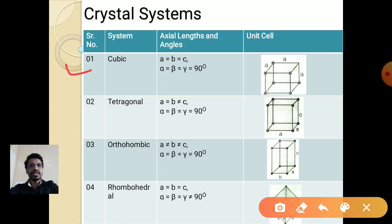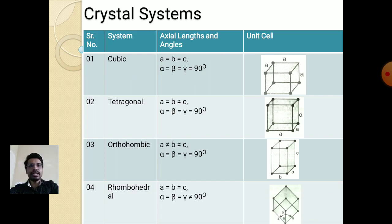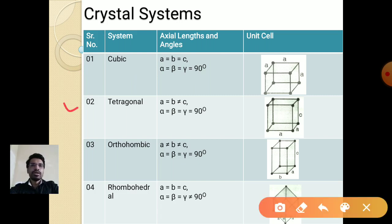The first crystal system is cubic. In the cubic unit cell, all lengths are equal — a equals b equals c — and all angles are at 90 degrees, so alpha, beta, and gamma are all 90 degrees. The second is the tetragonal system, where a equals b but not equal to c, meaning the height is greater, but the bottom two sides are equal. All angles are at 90 degrees.